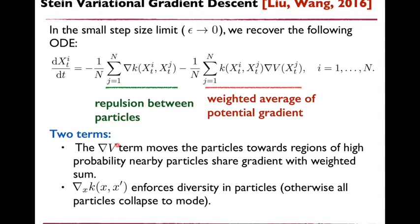There are useful scaling limits of SVGD. Taking epsilon to zero recovers a continuum dynamics for each particle described by an ODE. The right-hand side has two terms: the first takes a weighted average of the gradient of the log target distribution, pushing particles towards regions of high probability; the second is a repulsion term between particles — it pushes in the opposite direction of nearby particles, enforcing diversity so they don't all collapse to a single mode. This dynamics encourages efficient exploration of the state space while still attracting particles to regions of high probability, effectively sampling from the target distribution.